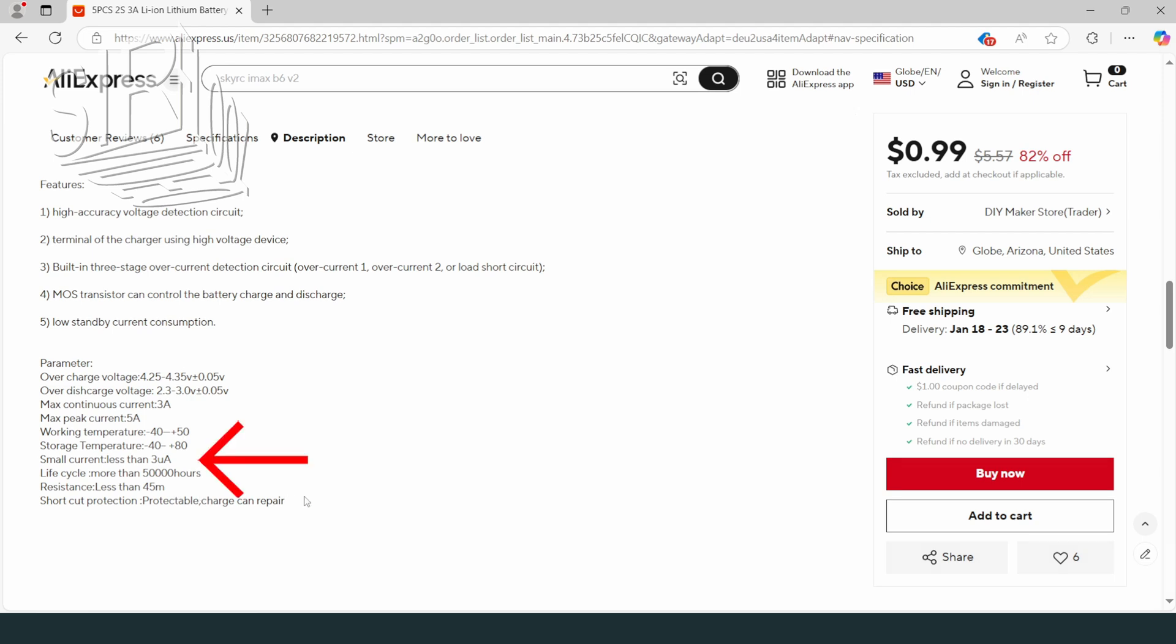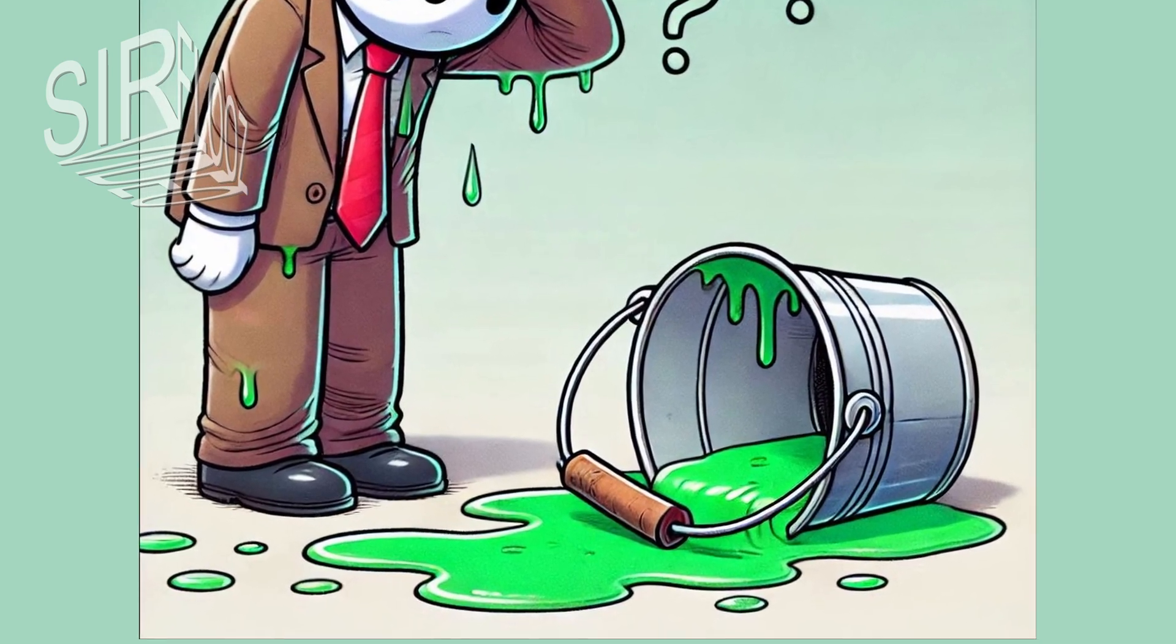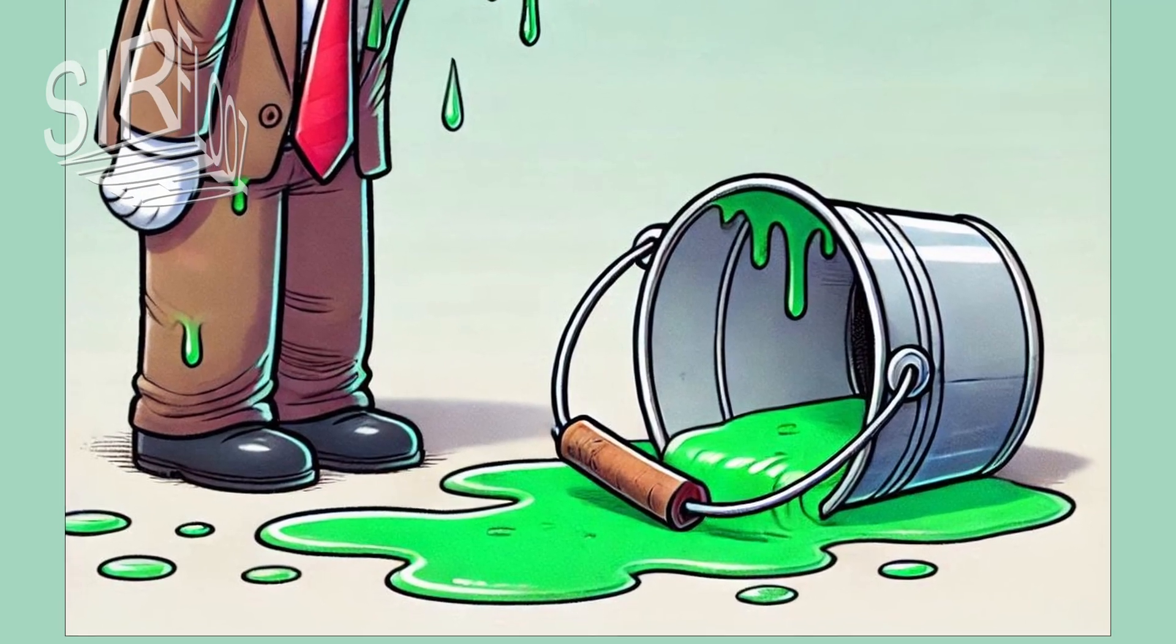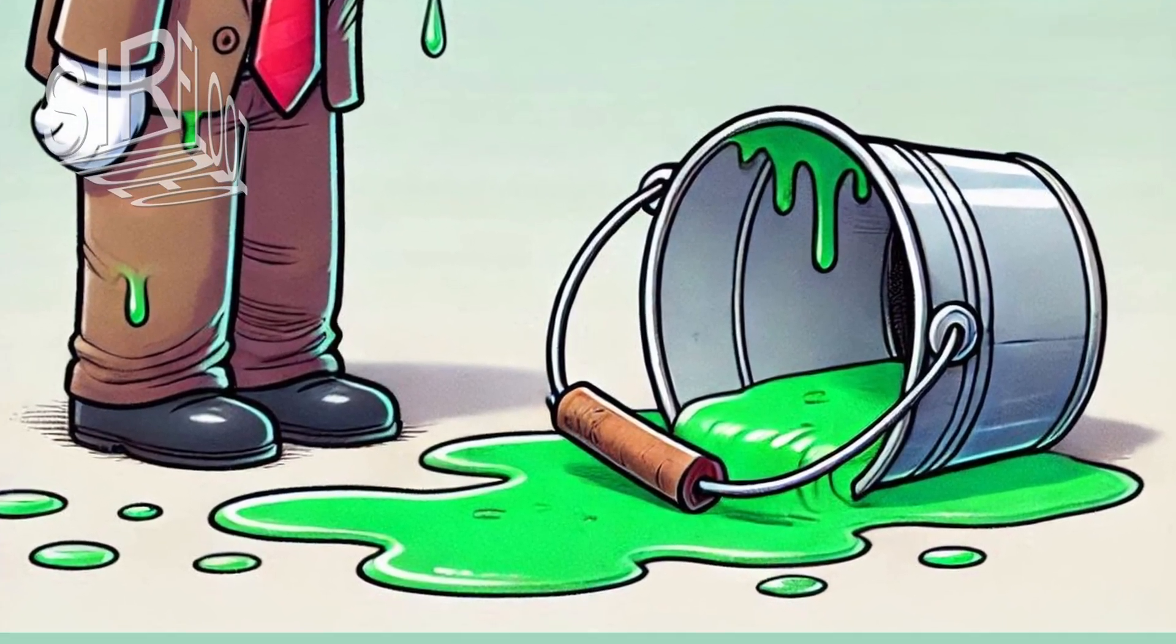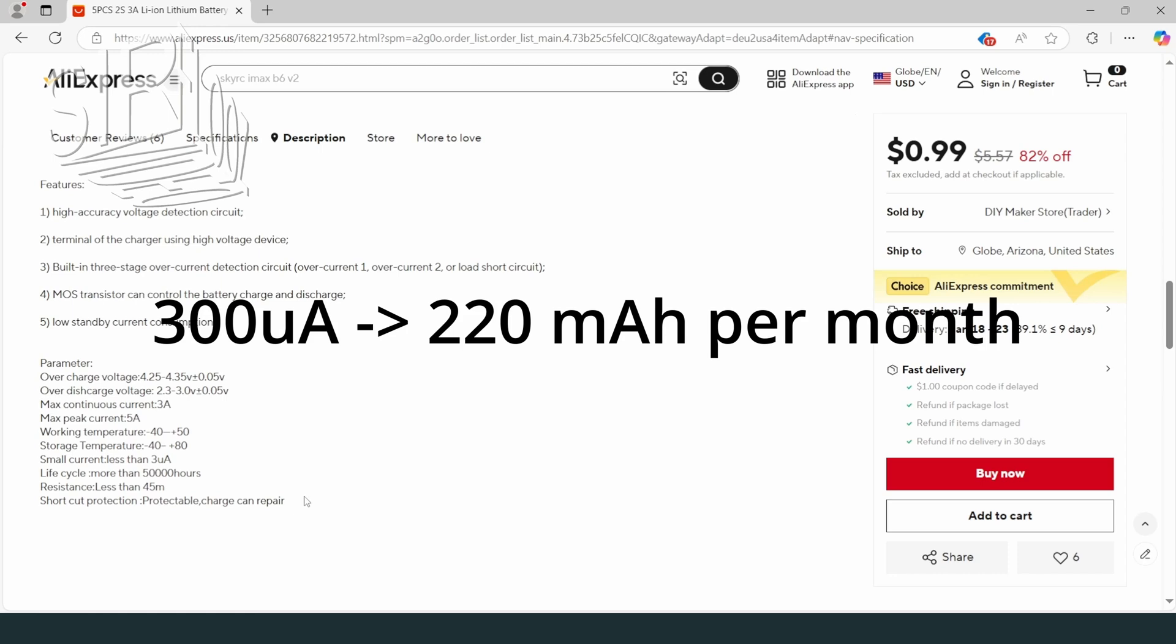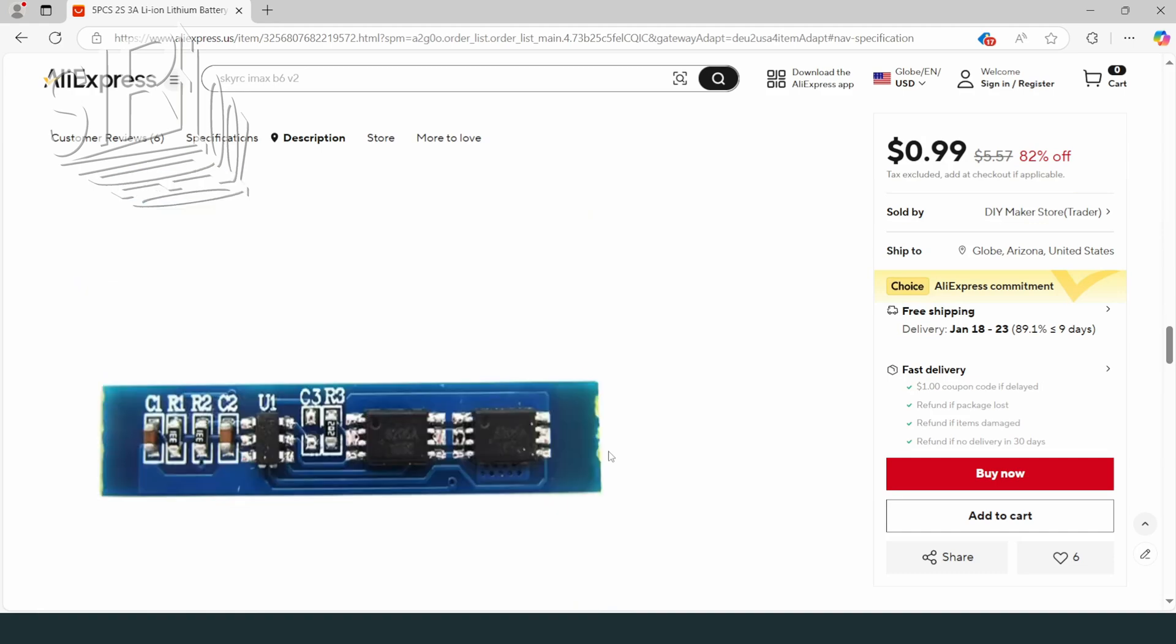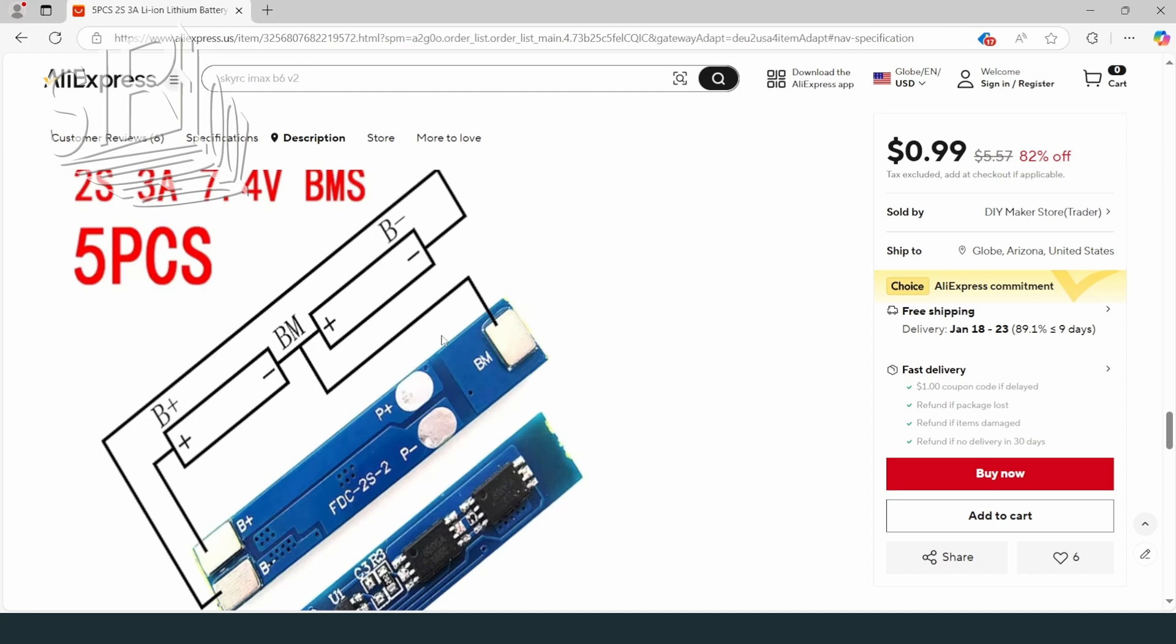The quiescent current is only 3 microamps. This is important so the connected battery pack is not discharged by the protective board within a short time. At 3 microamps, an average of only around 2.2 milliamp hours is consumed within a month. If the quiescent current were 300 microamps, it would already be 220 milliamp hours. So 3 microamps is really a good value.